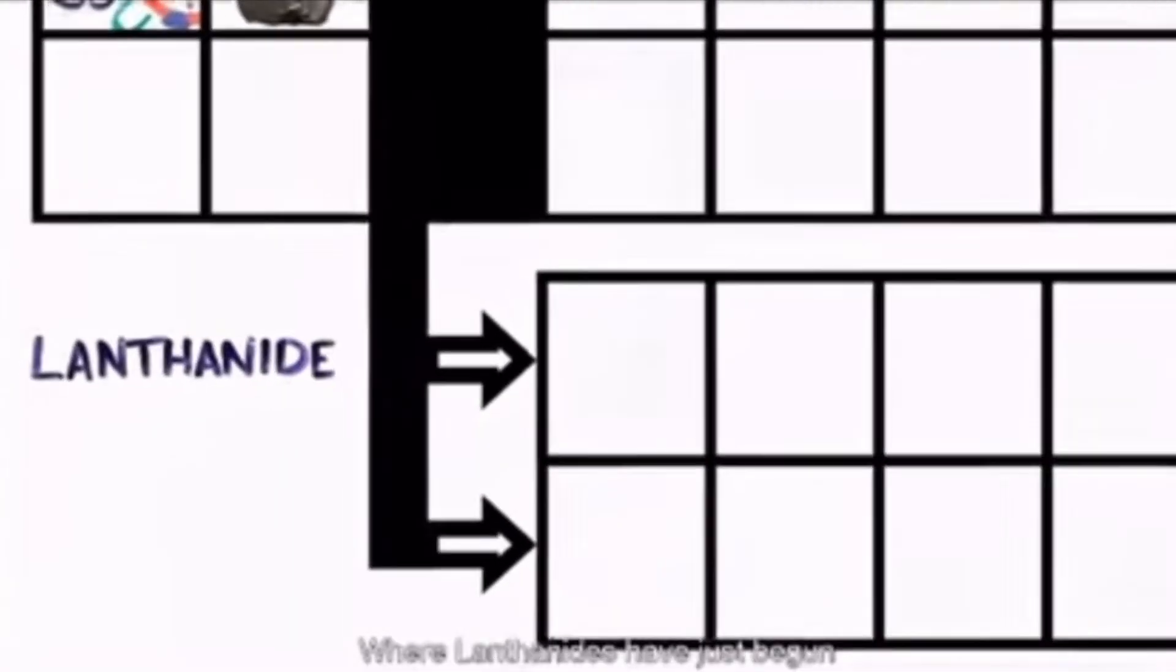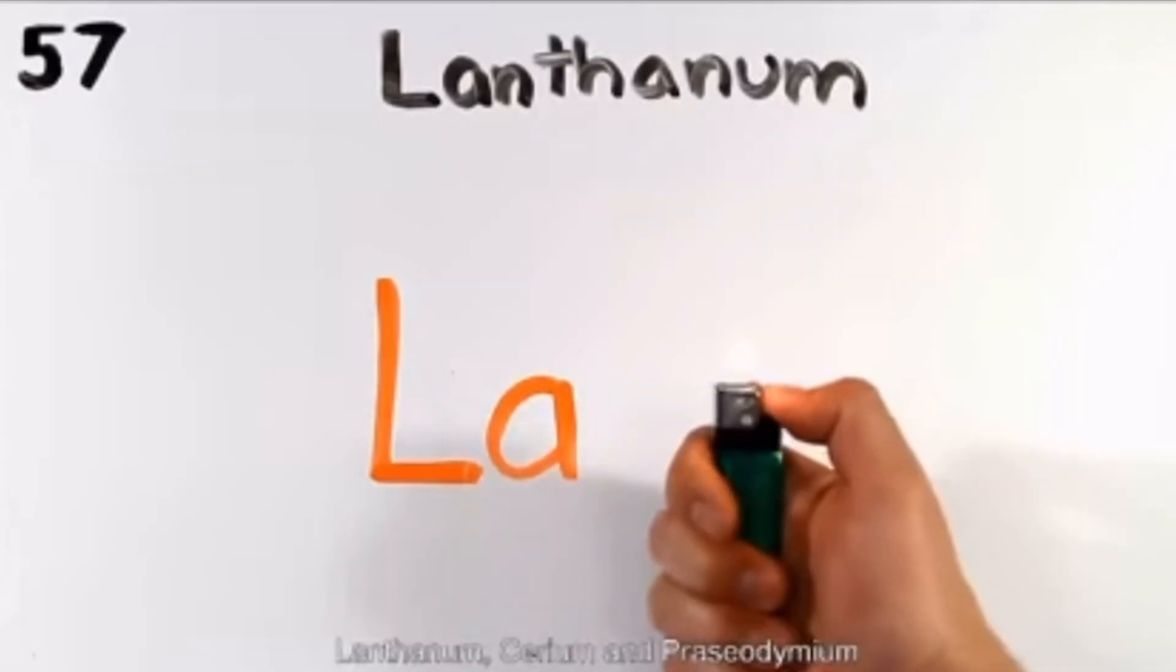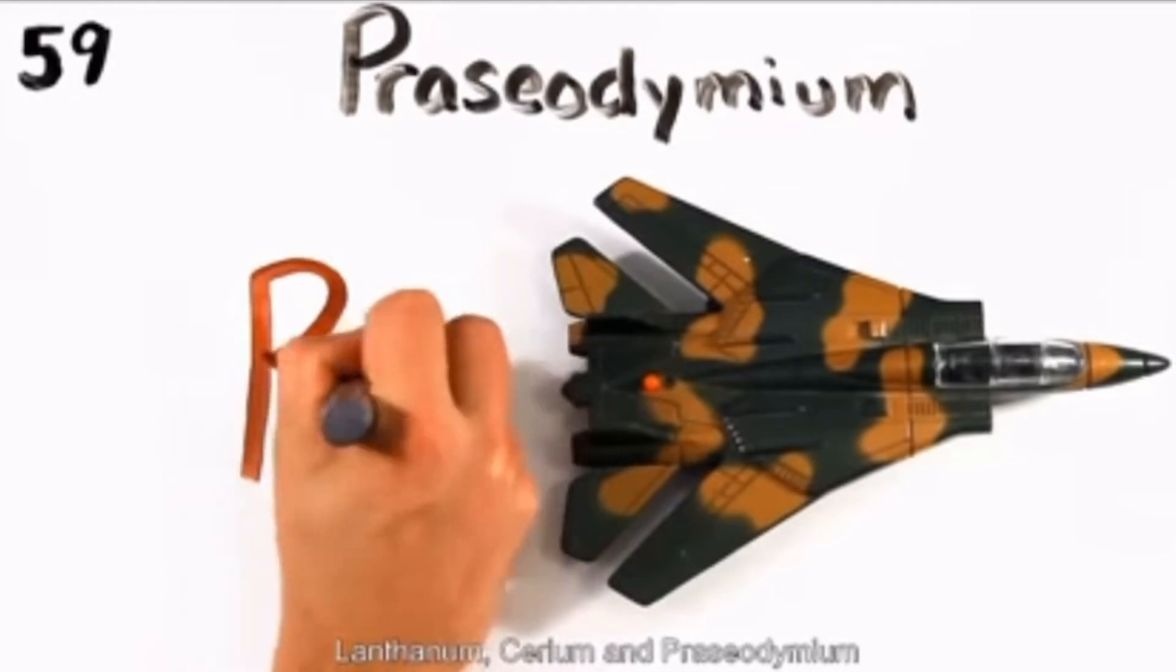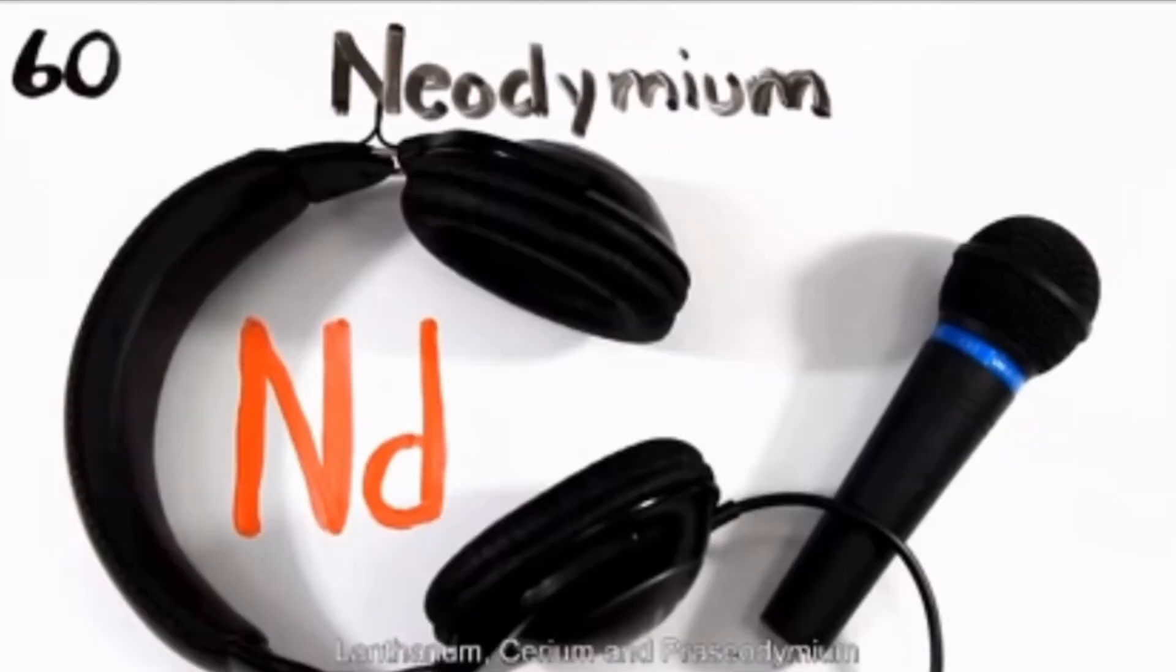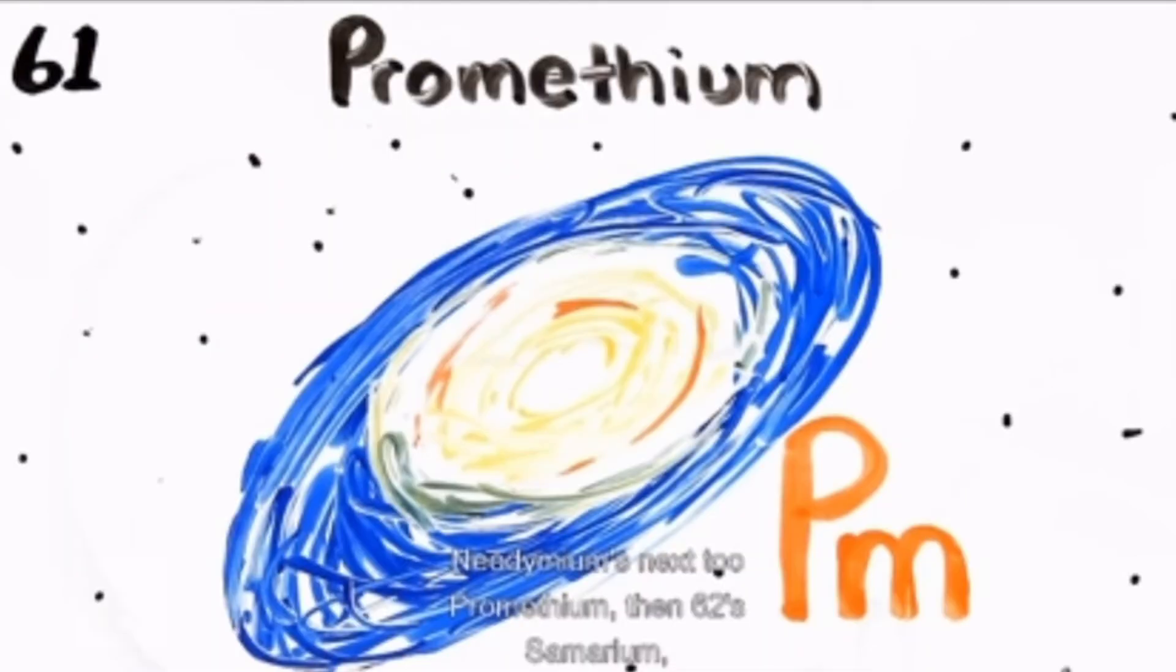Where lanthanides have just begun: lanthanum, cerium, and praseodymium. Neodymium's next to promethium.